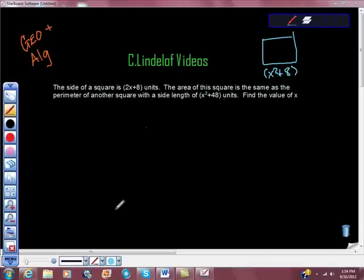The first one, the side of the first square is 2x plus 8 units long. The area of this square is the same as the perimeter of another square. The side length of that one is x squared plus 48.